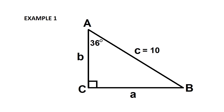For example, suppose that you are given angle A equals 36 degrees and side C is equal to 10 units. Of course, you know that angle C is 90 degrees. So, you need to find angle B, side A, and side B.